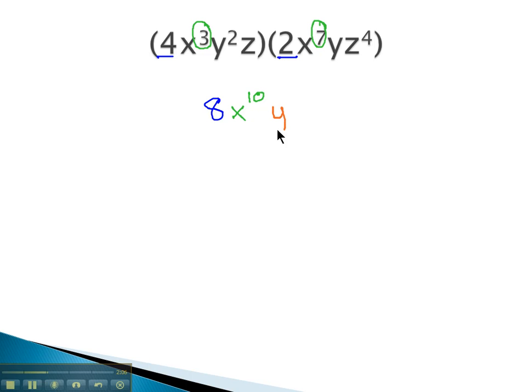Same thing for the y's. We're going to add the exponent. The first monomial has y squared. The second monomial just has a y. If there's no number written, we'll assume that means an exponent of 1. There's 1 single y there multiplied together. 2 and 1 means we have a total of 3 y's multiplied together.